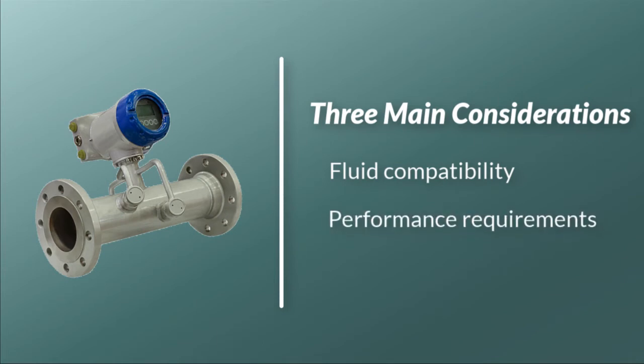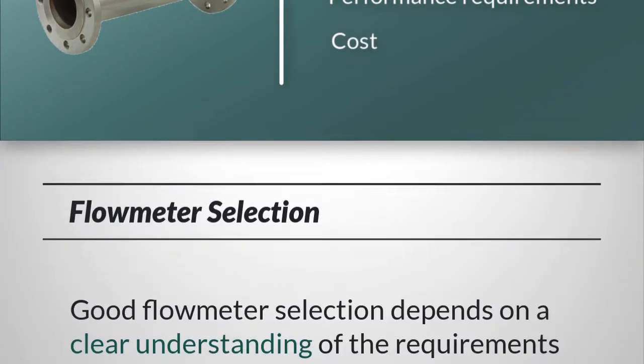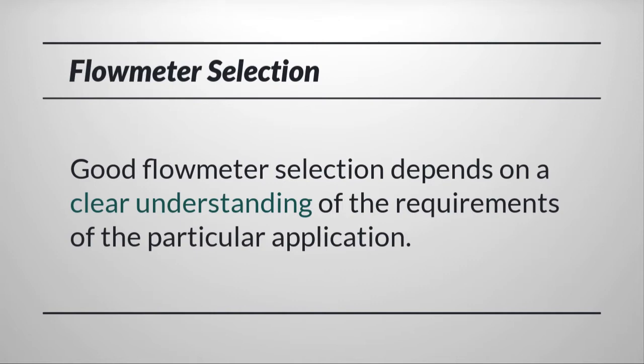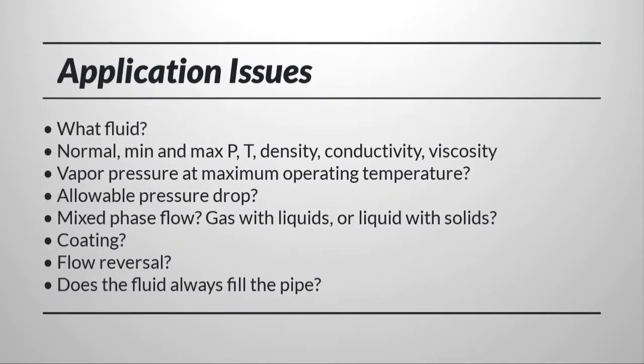Secondly, by overall performance requirements, and thirdly, by cost. Good flow meter selection depends on a clear understanding of the requirements of the particular application. Spend the time up front to fully evaluate the nature of the process fluid and the installation. Use a systematic, step-by-step process to develop the specifications.